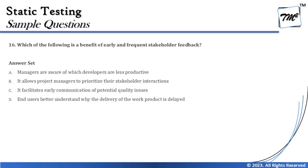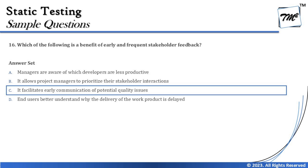The right answer to question 16 is C — it facilitates early communication of potential quality issues, which can be in the form of user requirements, user stories, or acceptance criteria. By implementing them, we raise a simple concern to the business: are we in line with your requirement? That's all from this tutorial. We'll cover the other two questions of chapter three in the next tutorial. Feel free to comment below with any queries — keep learning, keep exploring, and happy learning!